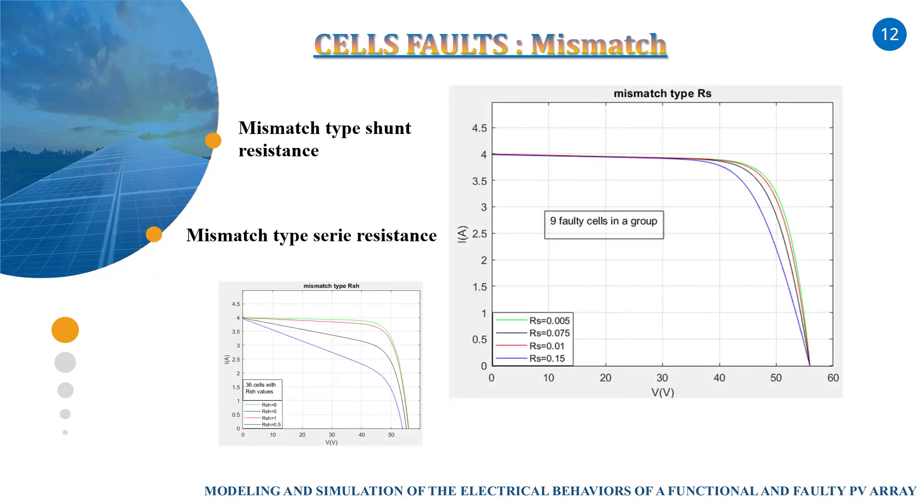And the second shows the behavior of an array with 9 faulty cells in a group with a mismatch type series resistance.